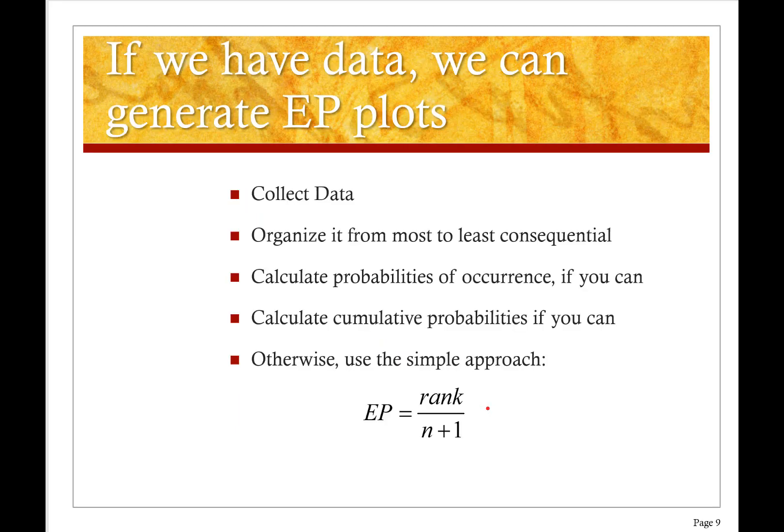So how do we do it? If we have a data set that we believe in and is reliable, we collect that data, we organize all of that data, then we organize the data from most to least consequential and we apply a ranking to those things. I'll show you that in a minute. We calculate the probabilities of occurrence if we can. If we have enough data we can calculate the probabilities of occurrence and we calculate the cumulative probabilities if we can. Otherwise we simply estimate the exceedance probability by taking the rank order and dividing that by the total number of data points plus one. That's a very simple way to calculate an exceedance probability.